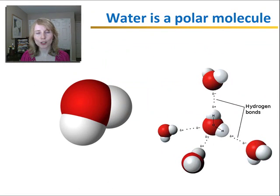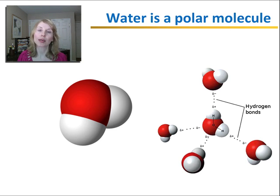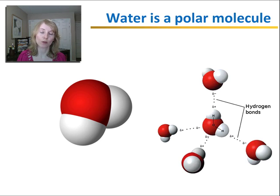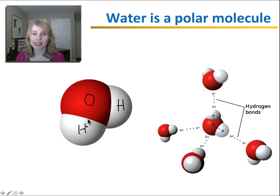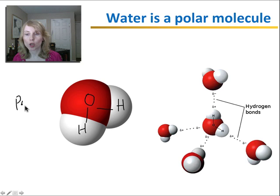Let's first review some of the properties of the water molecule. If you haven't yet watched the lesson on the chemistry background needed for biology, you should review that one first before continuing on. Water is composed of a single oxygen and two hydrogens, and with these hydrogens, the oxygen forms polar covalent bonds.